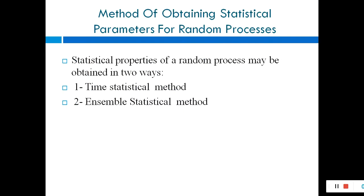The statistical properties of a random process may be obtained in two ways: the first one is the time statistical method, and the second is the ensemble statistical method.